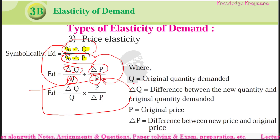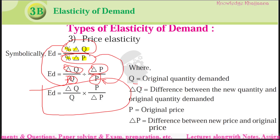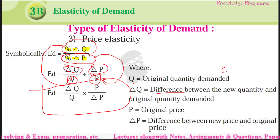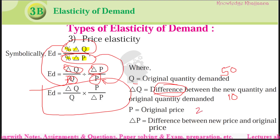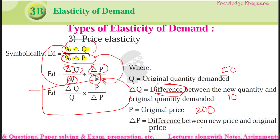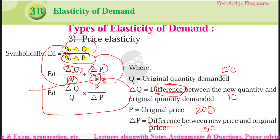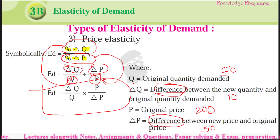P is the original price divided by change in price. Q is the original quantity demanded. Delta Q is the difference between the new quantity and original quantity demanded. If the original quantity demanded is 50 and new quantity demanded is 60, then the difference is 10. We take only the difference between the new quantity and original quantity demanded. Similarly, if the original price was 200 and new price is 150, the difference is 50 rupees. That is how we calculate the price elasticity of demand.